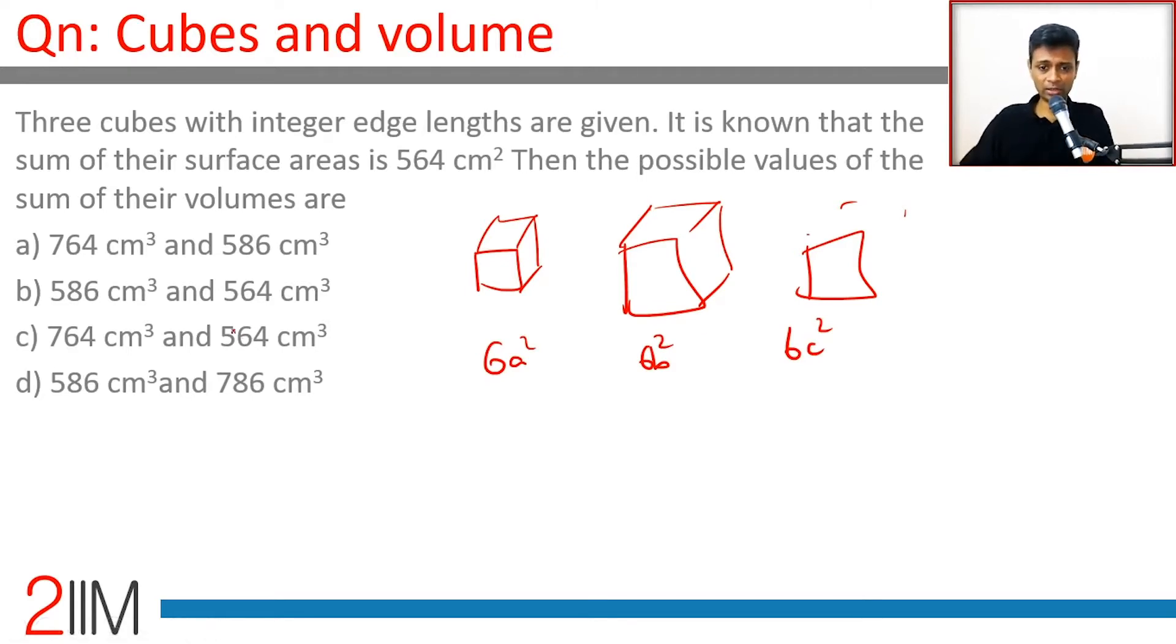6a square plus 6b square plus 6c square is 564. So a square plus b square plus c square is 564 by 6. 564 by 6 is 94. Now after this is just trial and error.